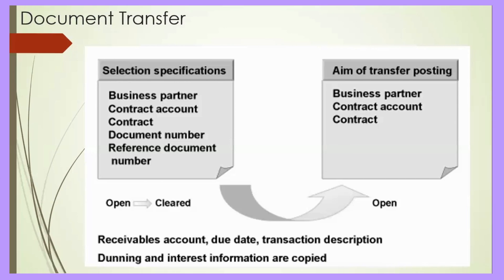There is another new topic called document transfer. The objective of document transfer is that whatever amount we have, we need to send it to another contract account. We have a business partner contract account with open item details, and we push all those amounts against another business partner contract and clear the open items of business partner one. The open items are moved to another business partner contract account and the current business partner is cleared.